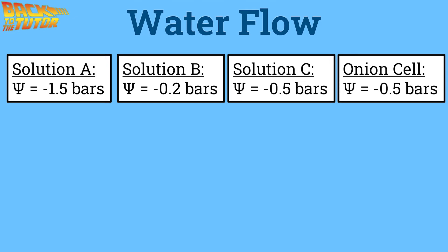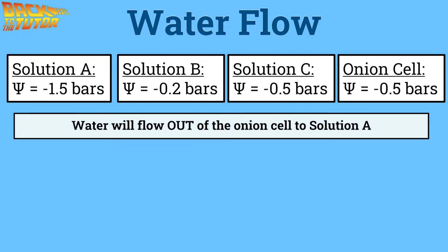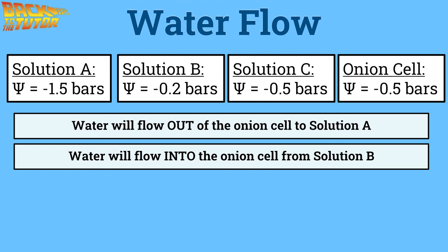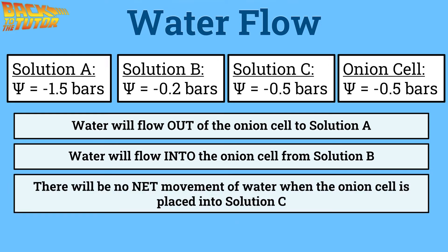Let's do some practice with predicting the direction of osmosis. Remember that water moves from high to low water potential. Imagine you had three solutions with different water potentials and an onion cell. If the onion cell were placed in solution A, water would flow out of the cell into the solution, because the solution has a lower water potential than the cell, and water flows from high to low water potential. If the onion cell were placed in solution B, the opposite would happen — water would flow into the onion cell from the solution, because the solution has a higher water potential than the cell.